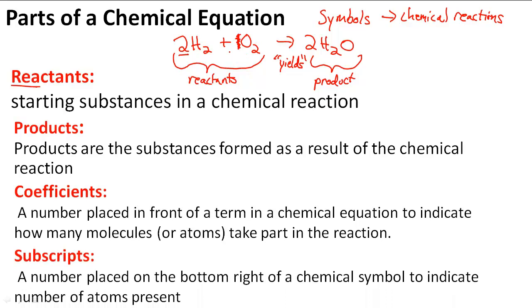Then we also have subscripts. It's a number placed on the bottom right of a chemical symbol to indicate the number of atoms present. This shows that I have two H's that are chemically combined together, H and H. This tells me that when I have this coefficient, there are two of these things.